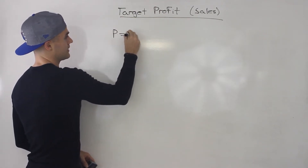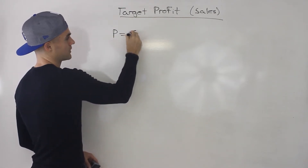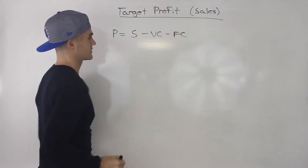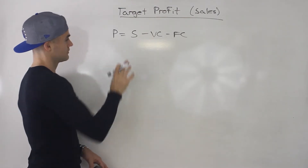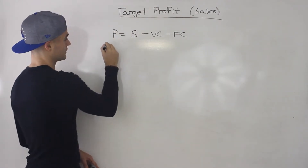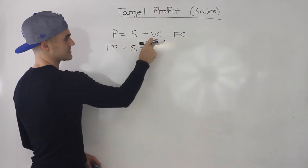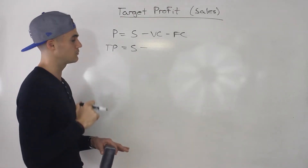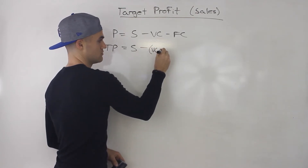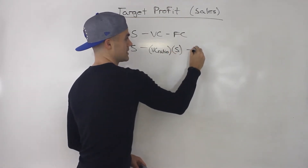It's all going to derive from that general formula where profit is sales minus variable costs minus the fixed costs. And if you remember from break-even, profit was zero. But now that we're going for a certain profit, let's call this target profit here on the left. Then we're going to have sales minus the variable cost, which we represented as the variable cost ratio times the sales, minus the fixed costs.